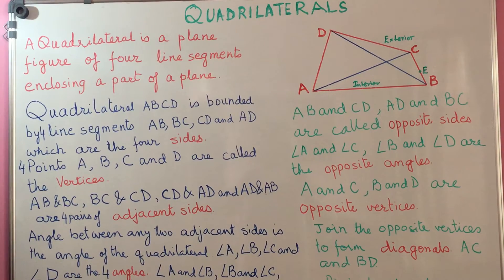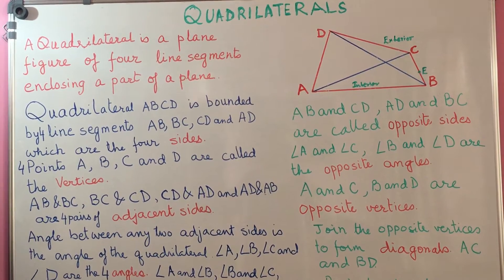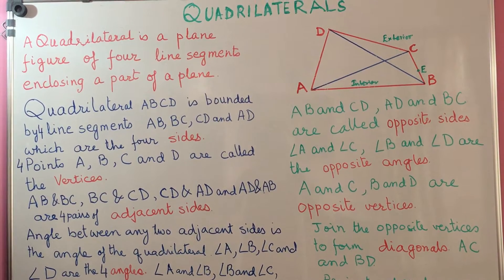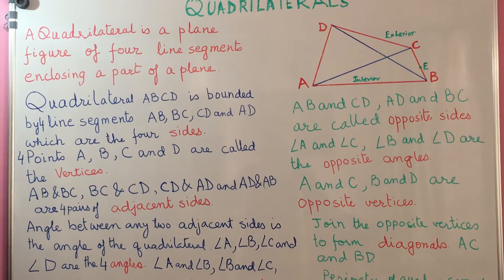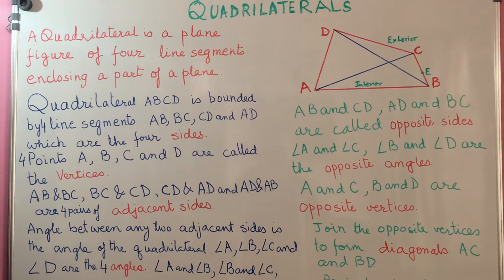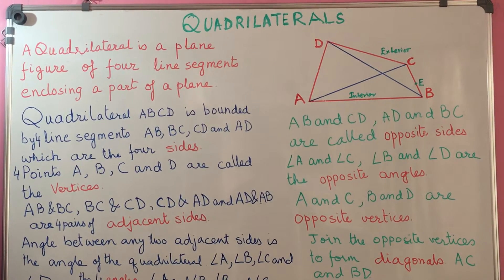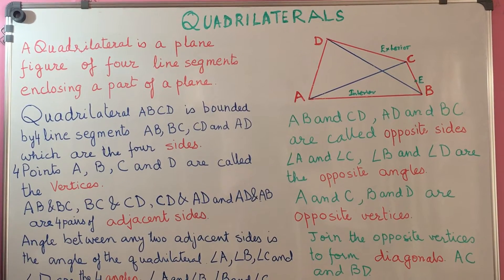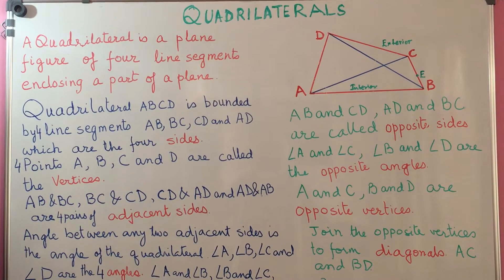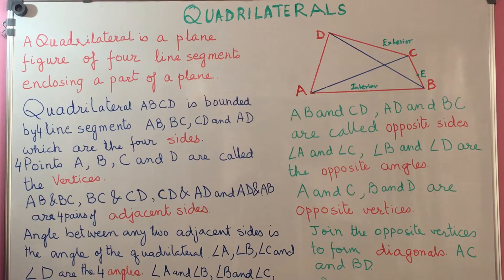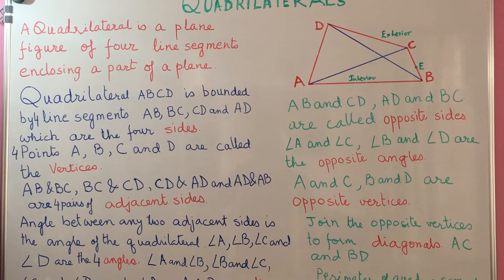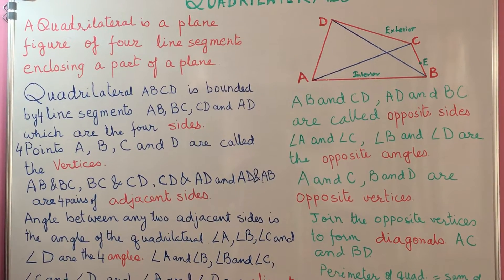Here on this board you can see a quadrilateral A, B, C, D which is bounded by four line segments: AB, BC, CD, and AD. Now inside is the plane region, and the four line segments are said to be the sides of the quadrilateral.